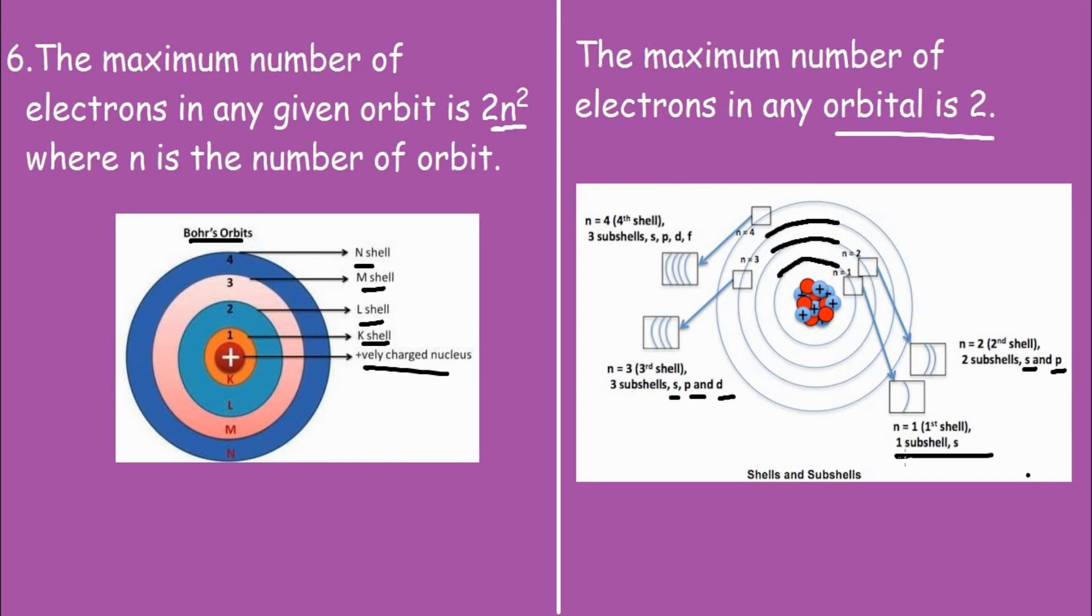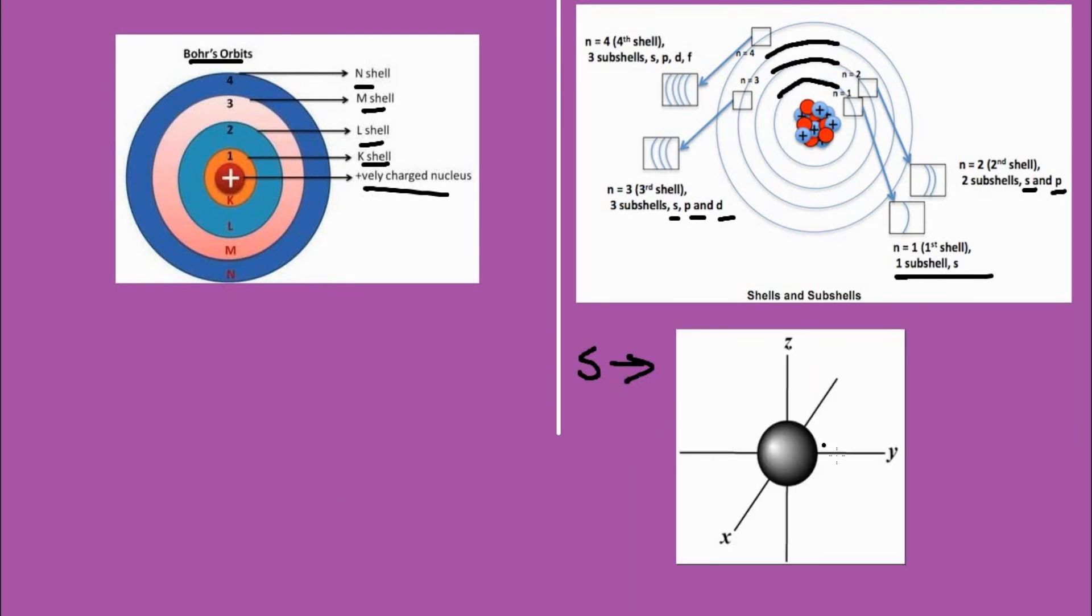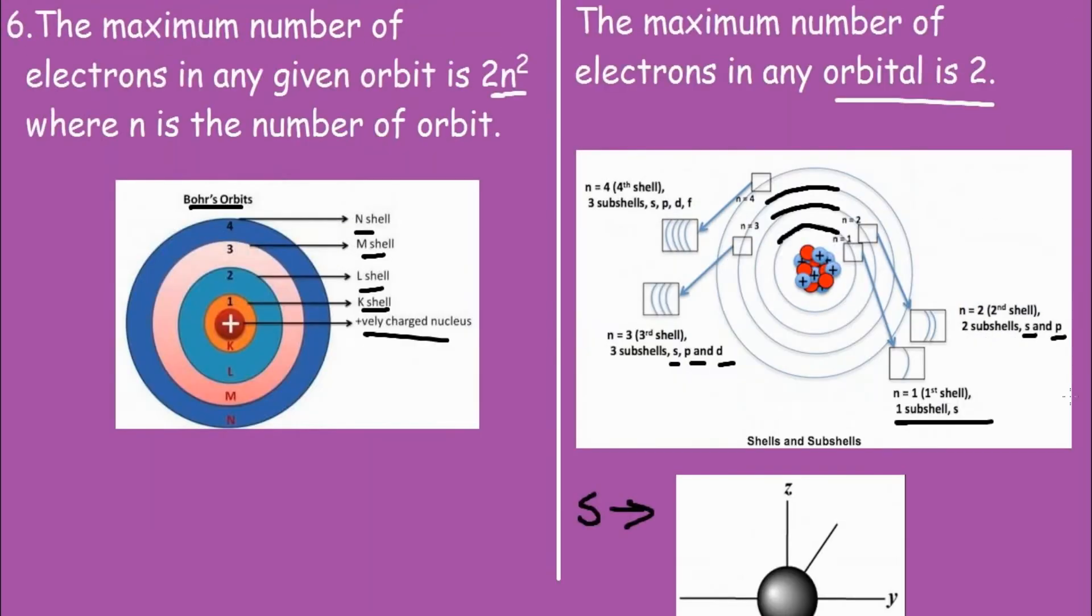Now each of these s, p, d subshells or orbitals can be of different shapes. The s orbital looks somewhat like this. So as you can see, s orbital is spherically symmetric as I mentioned above.